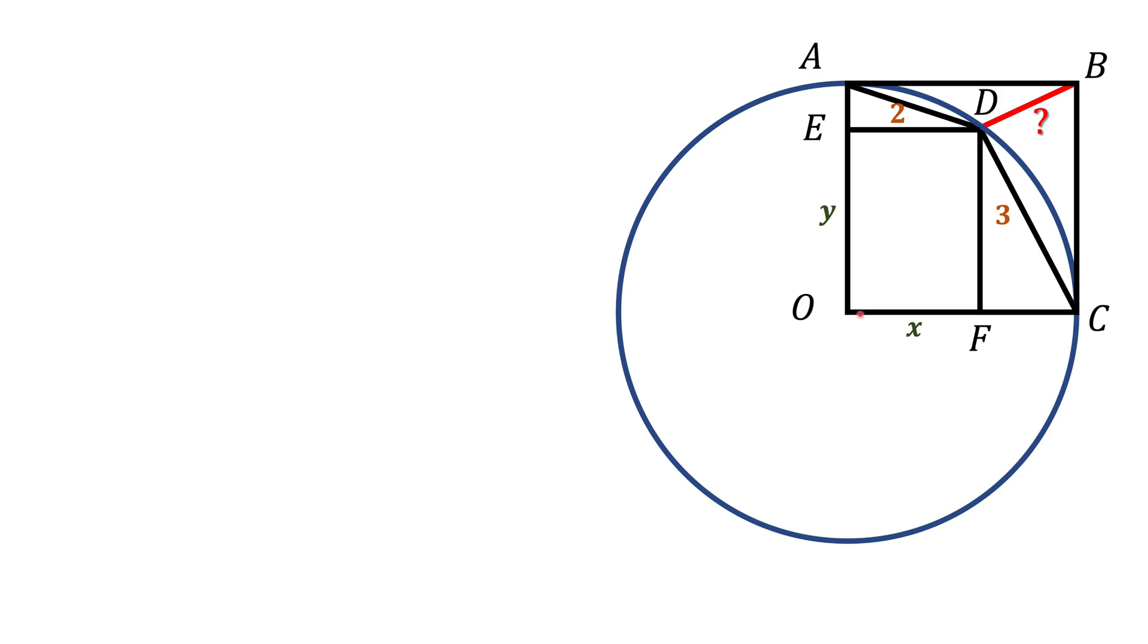If I call radius of this circle as R, in this case OC is R, OF is X, that means that CF is R minus X. In a similar manner we can find that AE is R minus Y.